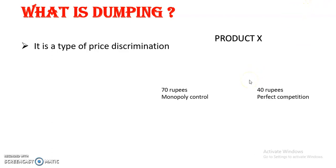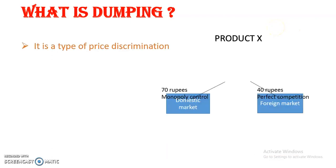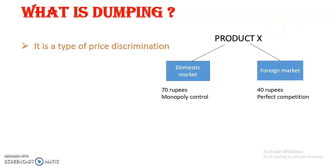Now let us see what dumping is with an example. We have a product X, and we are selling the same product X in the domestic market at a price of 70 rupees and in the foreign market at a price of 40 rupees.